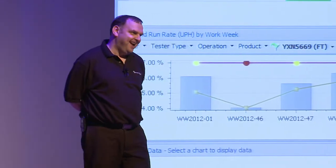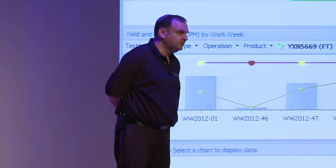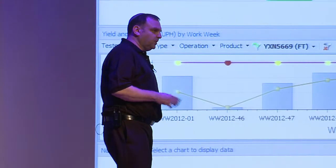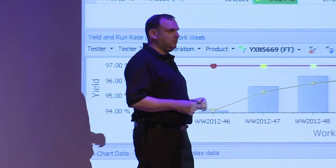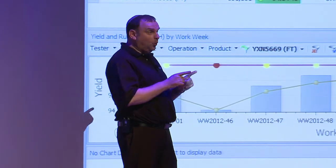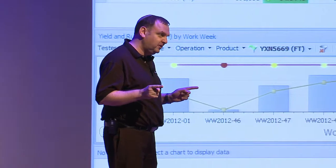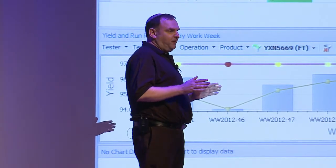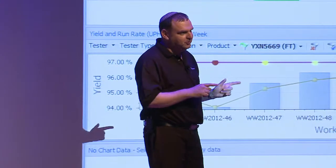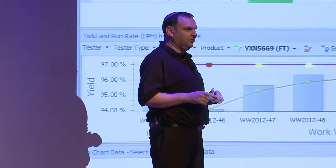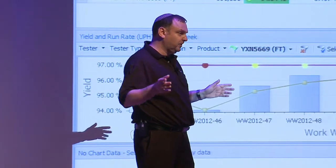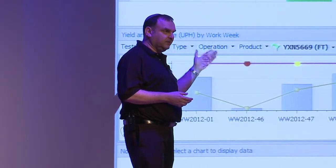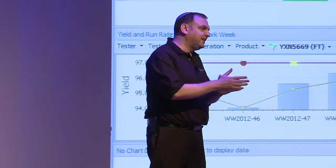That's also a very good question. For the last three years it changed about four times until we got the message and just left it flexible. You can define your own measures that calculate it different ways. Some customers say only if all 16 sites returned a good result will I include that touchdown in my average calculation. Others say even if only 10 of those sites were in use but all were good, include that touchdown. And others want the time from start of test to start of the next unit, including the indexing time. Today you have the flexibility, by using what we call custom fields, to create your own field representing any of those combinations.